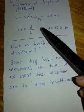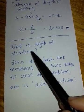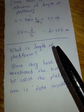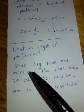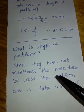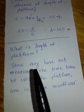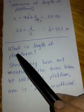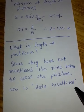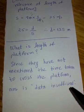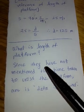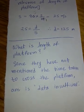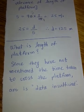In this same question, instead of asking the length of the train, if they ask you what is the length of the platform, then what will be your answer? Your answer will be data insufficient. Because in the problem they have not mentioned how much time the train takes to cross the platform — they have only mentioned how much time the train takes to pass a man standing on the platform. And hence, to find the length of the platform, this data is insufficient. In data sufficiency questions, such confusing questions often appear.